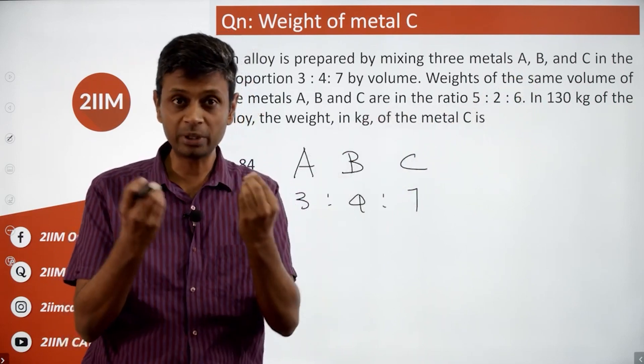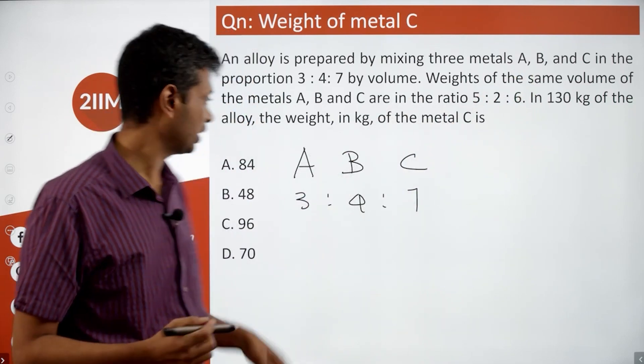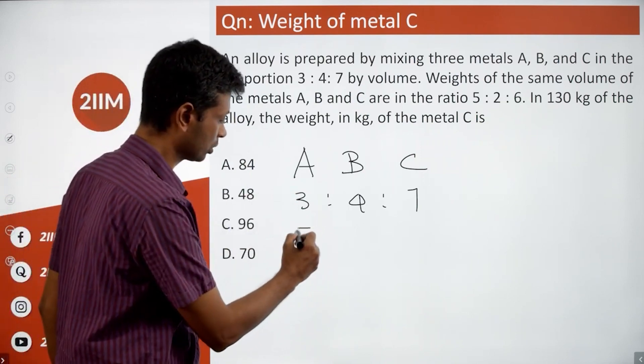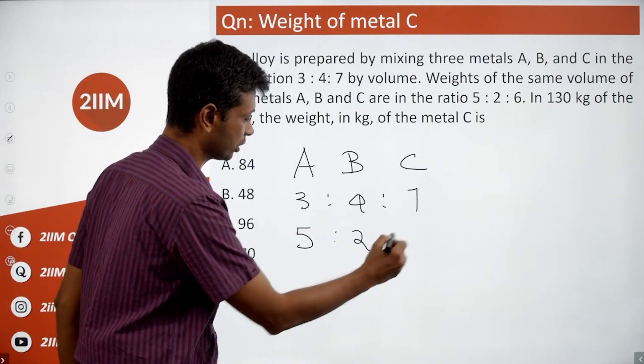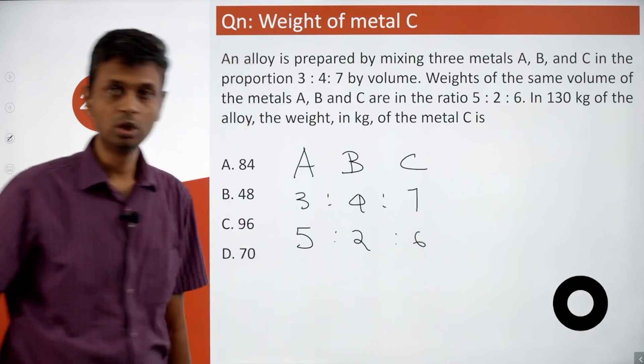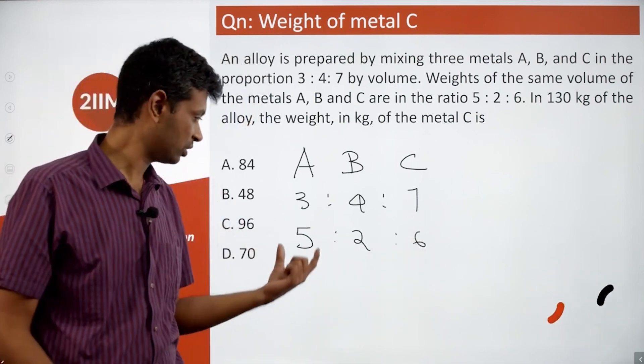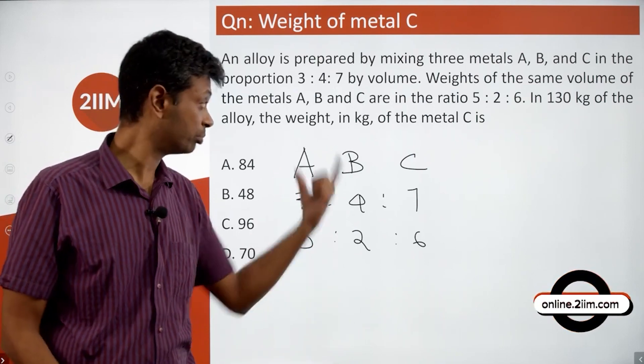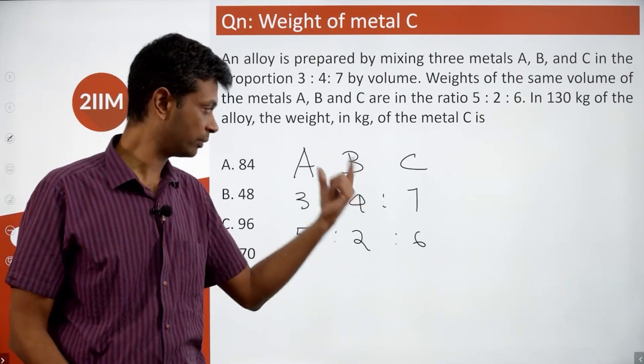Because the link between these two just jumps out. The ratio of volumes is 3:4:7. Ratio of weights for unit volume is 5:2:6. For 1 liter of A that weighs 5 kilograms, 3 liters will weigh 3 into 5. 1 liter of B weighs 2 kilograms, 4 liters will weigh 4 into 2.